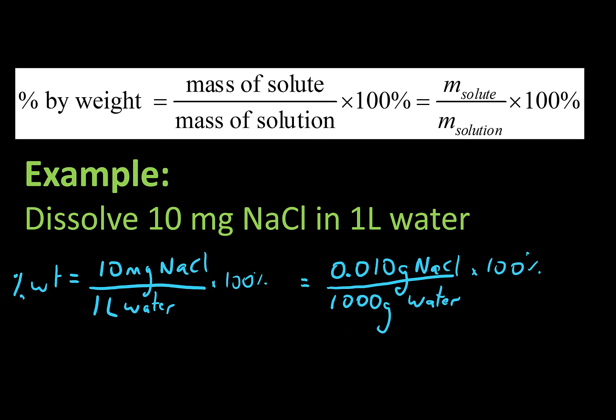For parts per million, you're only making the change right here. You're changing it instead of multiplying by 100, you'll multiply by a million. So 10 parts per million.